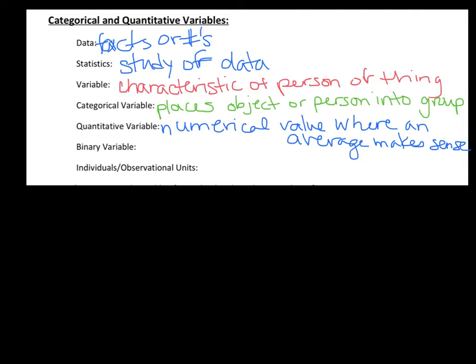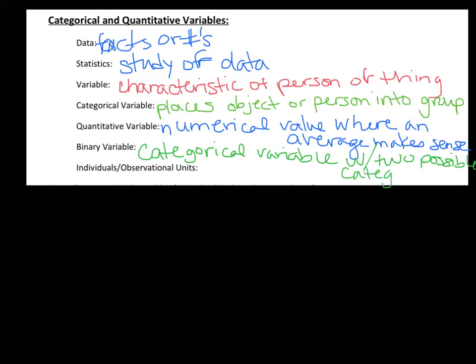A binary variable is a categorical variable that has two possible answers or two possible categories. The word 'binary' generally has to do with two. An example of this would be asking people 'do you have a pet?' — the answers would be either yes or no, so there are two possibilities.